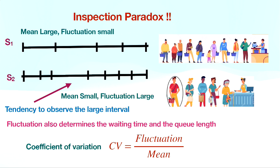Therefore, the intervals are not equally spaced. It can happen that the average service time is two minutes, but sometimes one minute, sometimes two minutes, or even seven or eight minutes to serve. The inspection paradox says that we will tend to fall in the position when the interval is large — that's why we wait longer. Not only arrival rate and service rate determine the queue length, but fluctuation also plays an important role.